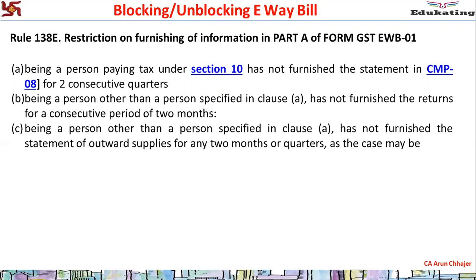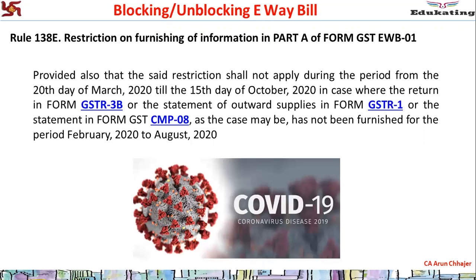The third category - other than composition dealers, regular registered persons - covers those who have not furnished their statement of outward supply, that is GSTR-1 under Section 37, for two months if on monthly frequency, or two quarters if on quarterly frequency. In such cases, their e-waybill system will be blocked and no one can enter their GSTIN either as a supplier or as a recipient.